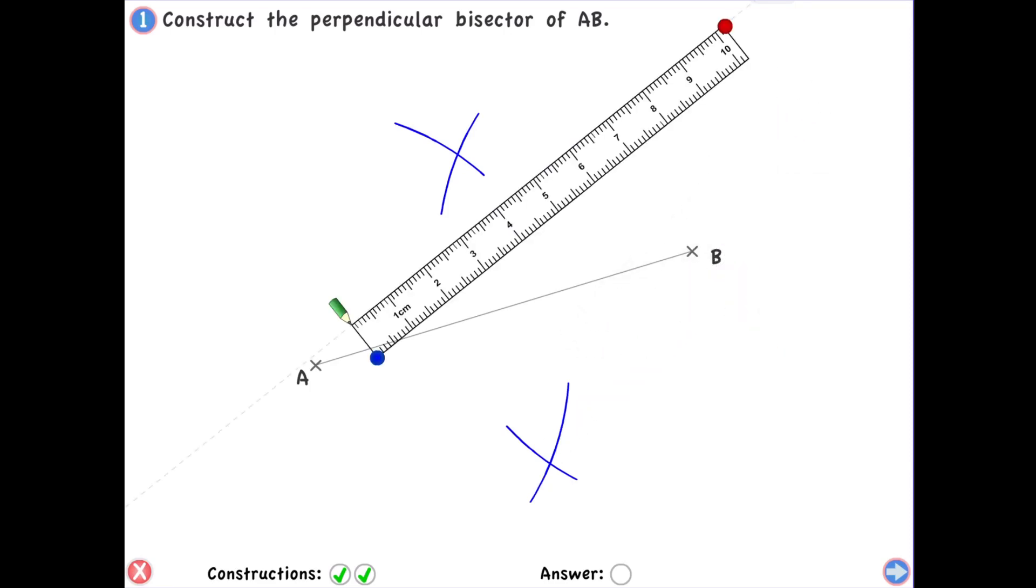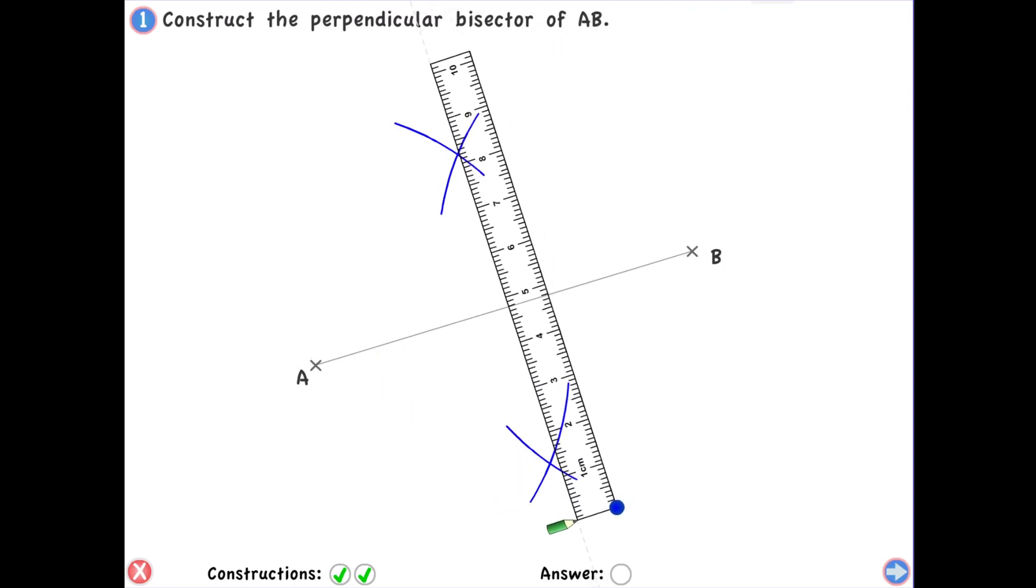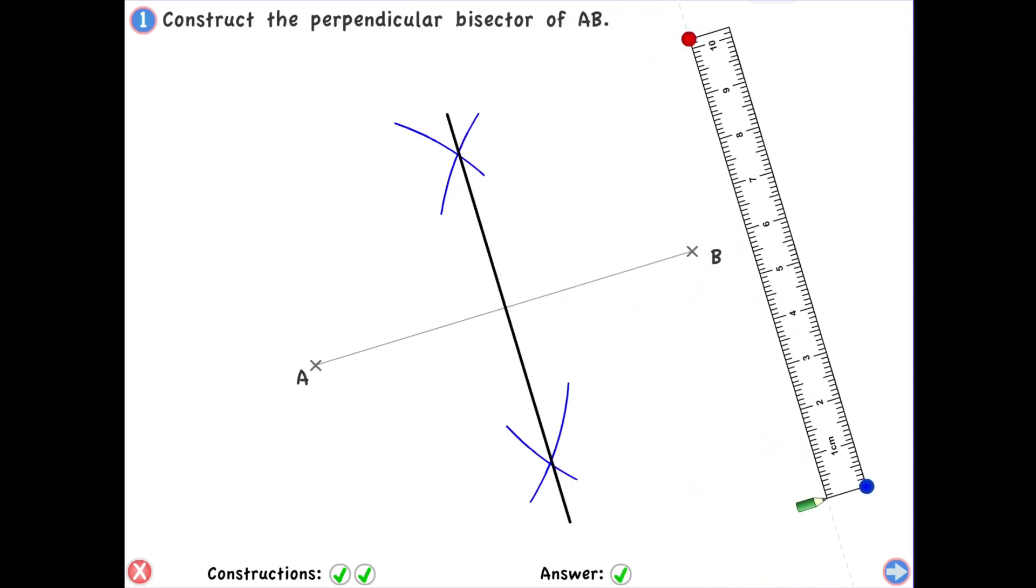The next thing you do is take out your scale, and the objective is to join these two points so that we have a straight line. This right here is how you draw a perpendicular bisector of two points.